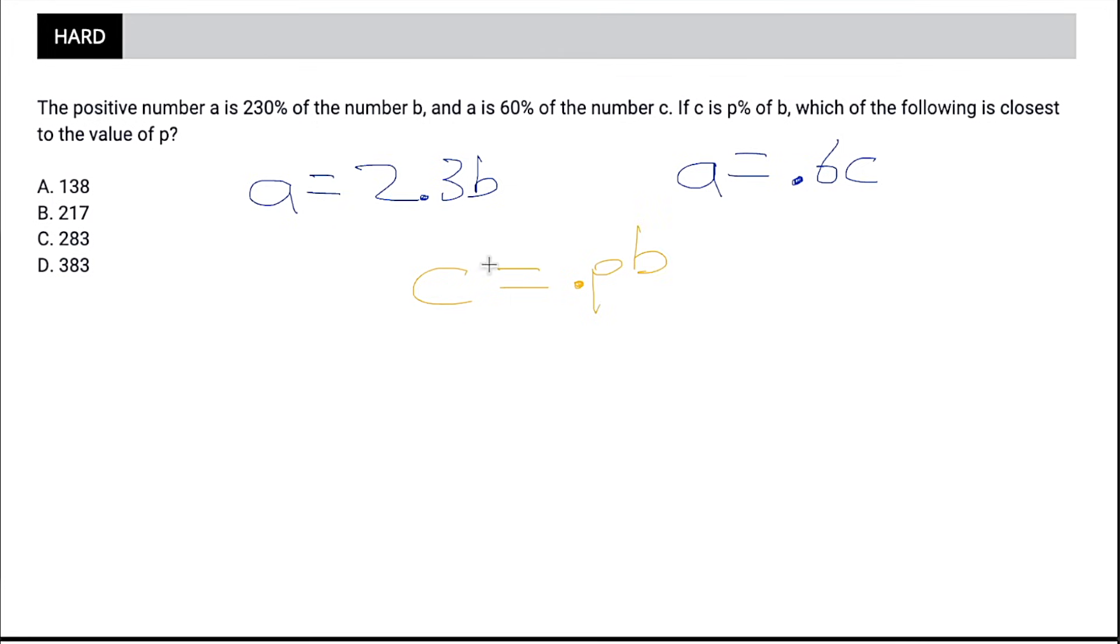Now that we have it laid out, you can kind of see that we just need to mess with these two equations in a way that we end up with this equation. So we need to get C by itself in relation to B. We can use substitution to do this because we already have this equation that involves C in relation to A. So if we just substitute this in for A, then we kind of have what we want. So instead of A equals 0.6 C, we're going to say 2.3 B equals 0.6 C. And then we're just one step away from getting C by itself. We just divide by 0.6 on either side, and then we'll get our answer. Now, I don't feel like doing 2.3 divided by 0.6 by myself. So I'm going to enlist the help of Desmos real quick. And it looks like our answer is 3.83. So to be clear, C equals 3.83 B. And remember, 3.83 is our quote unquote percent, our point P, and 3.83 is 383%. So that's our answer.